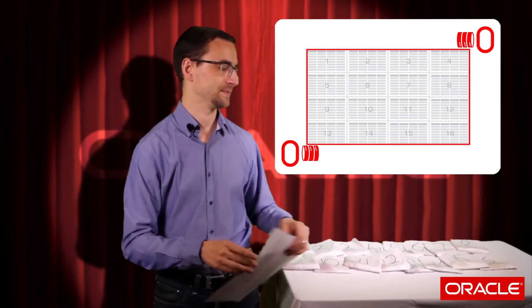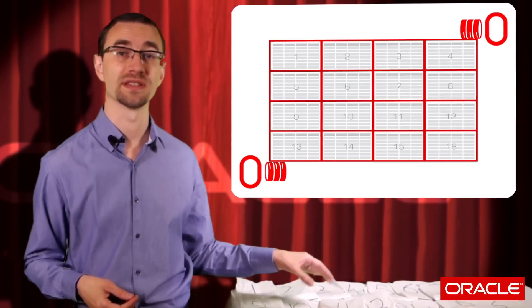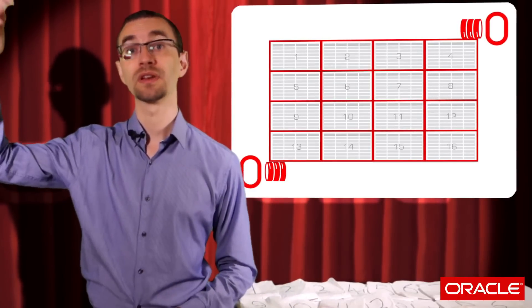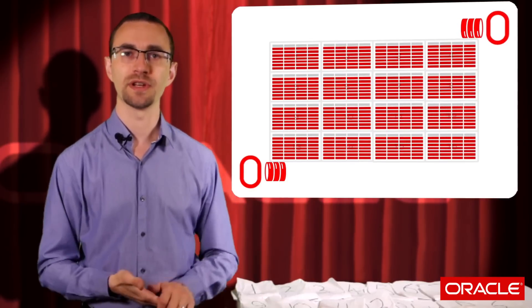Oracle tracks how well the order entries are in an index relative to how they're physically stored in the table via the clustering factor. This is a numeric value with a lower bound of the number of blocks in the table and an upper bound of the number of rows stored in the table. The lower the number, the better clustered the data is.